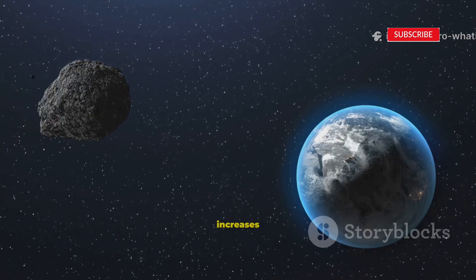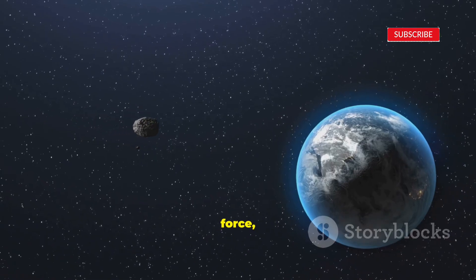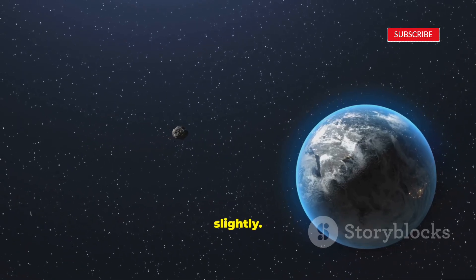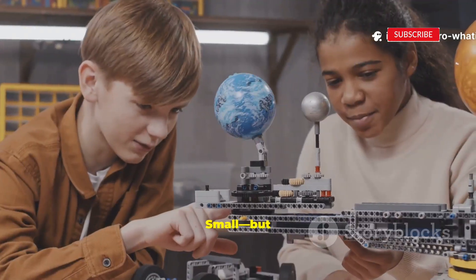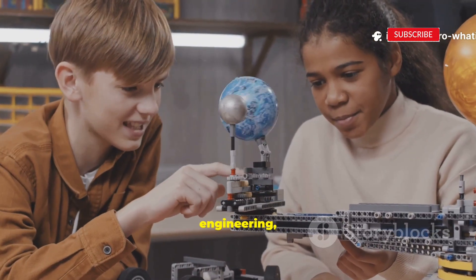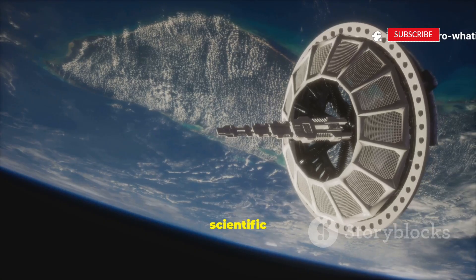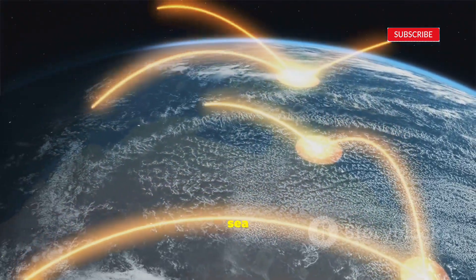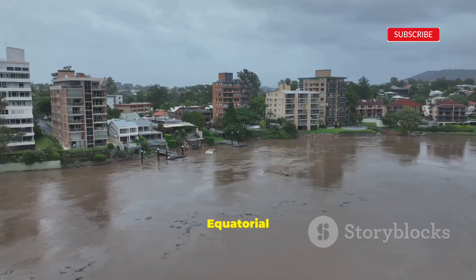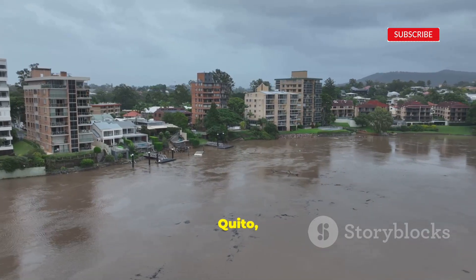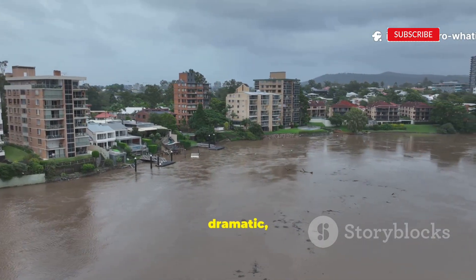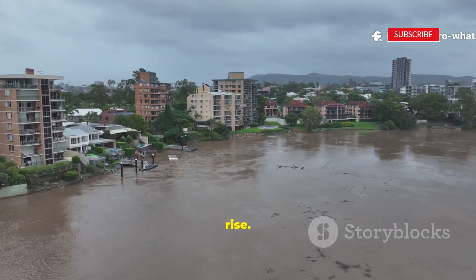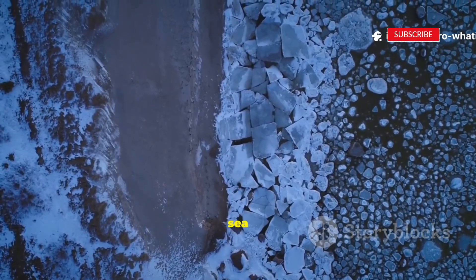Faster spin increases centrifugal force, countering gravity slightly. Near the equator you would feel a little lighter, small but it matters for precision engineering, satellite launches, and scientific measurements. Water migrates toward the equator. Sea levels rise there. Equatorial cities like Singapore, Quito, Nairobi face dramatic permanent sea level rise. Higher latitudes would see sea levels drop.